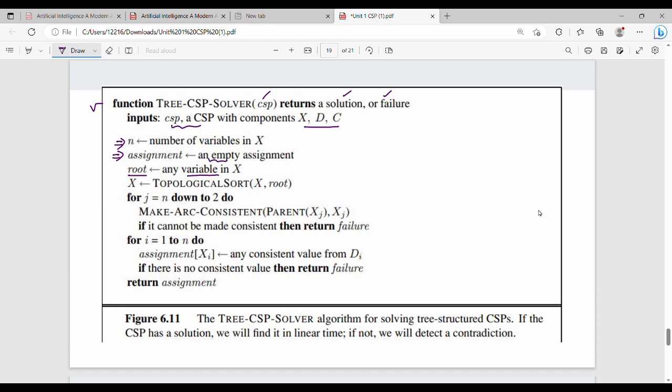Any variable in X will be root. In previous graph, A will be root. Then X will be topological sort of X root. So overall graph - overall tree plus root of topological sort of X. For j equal to n, n is the number of variables, down to 2. 1 to n is arc consistent. If you are doing node Xj, Xj and Xj are arc consistent.